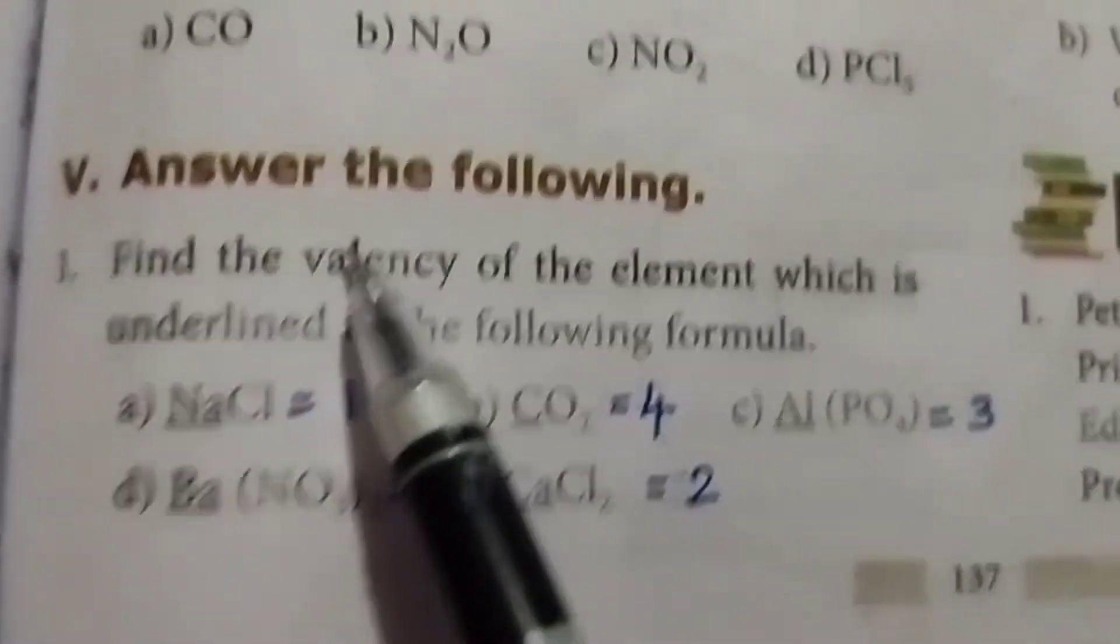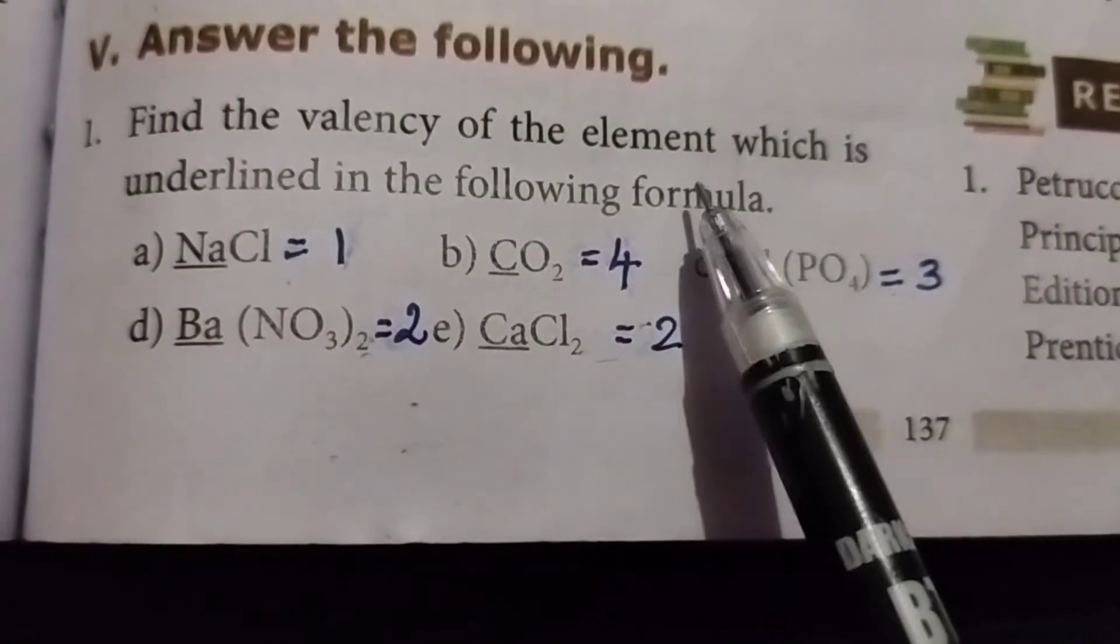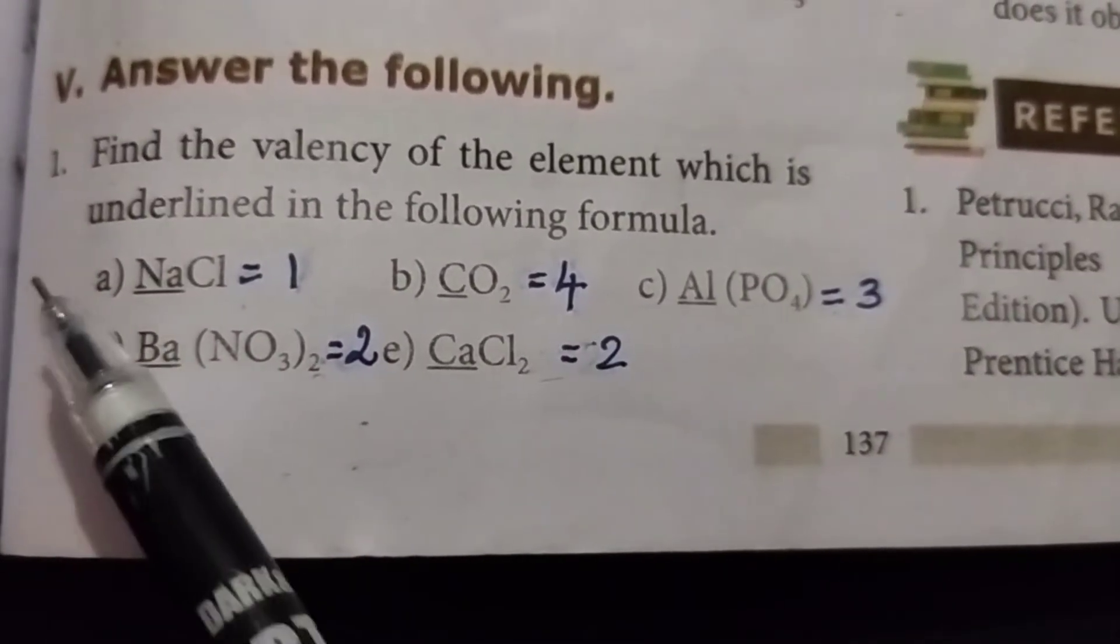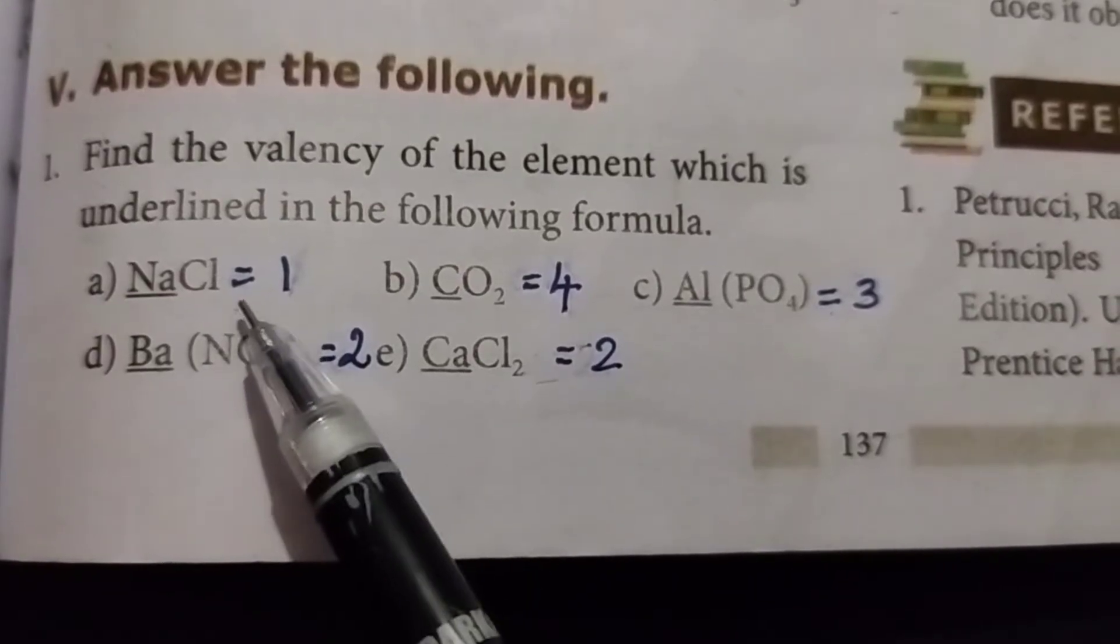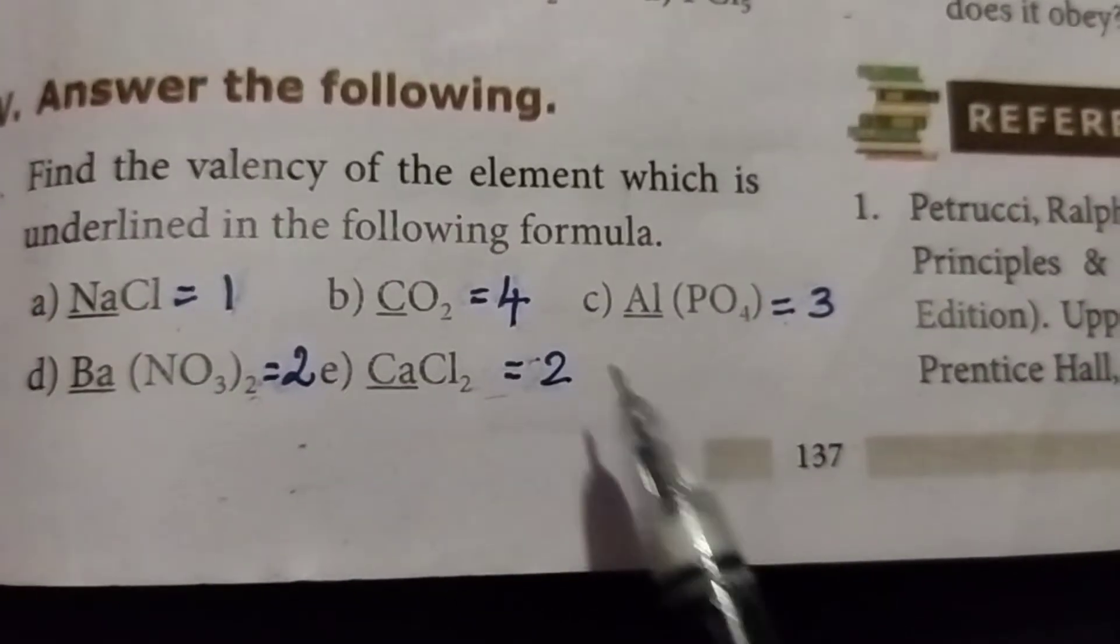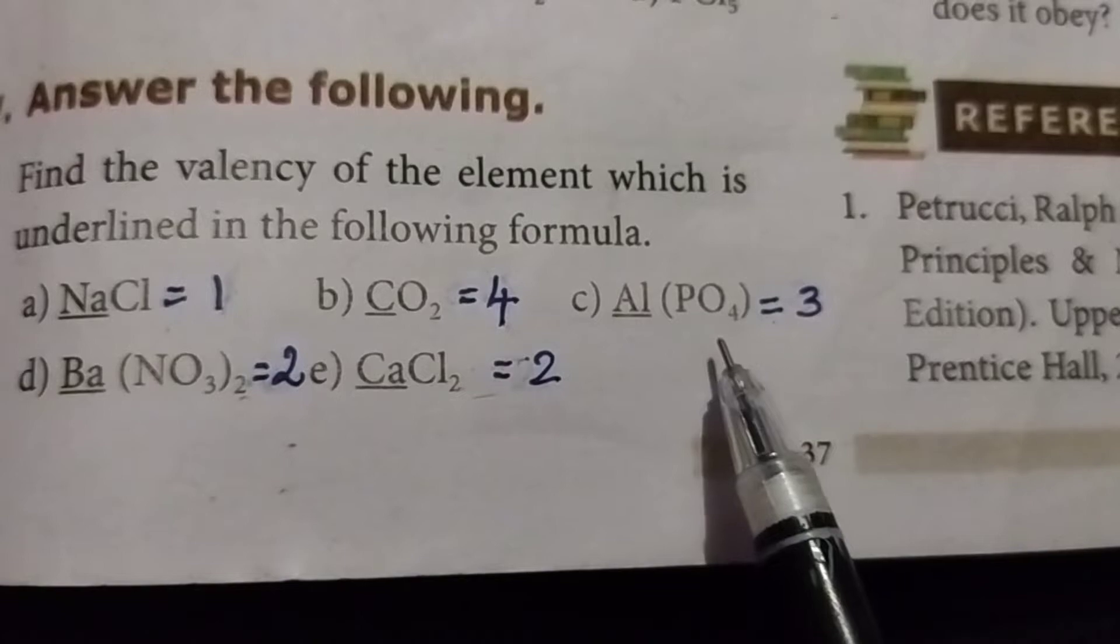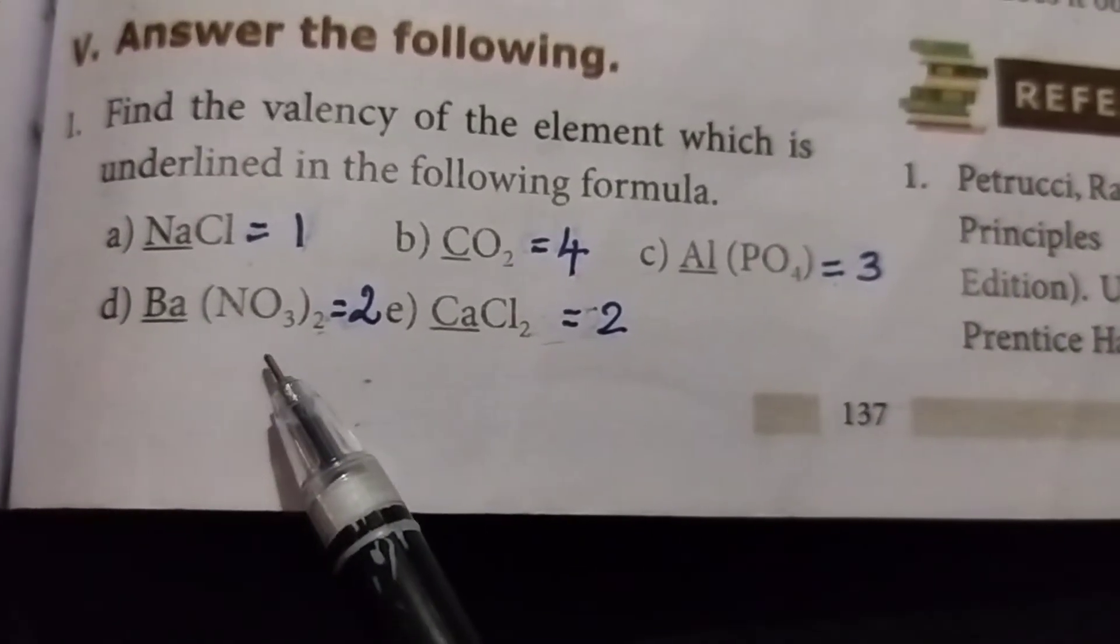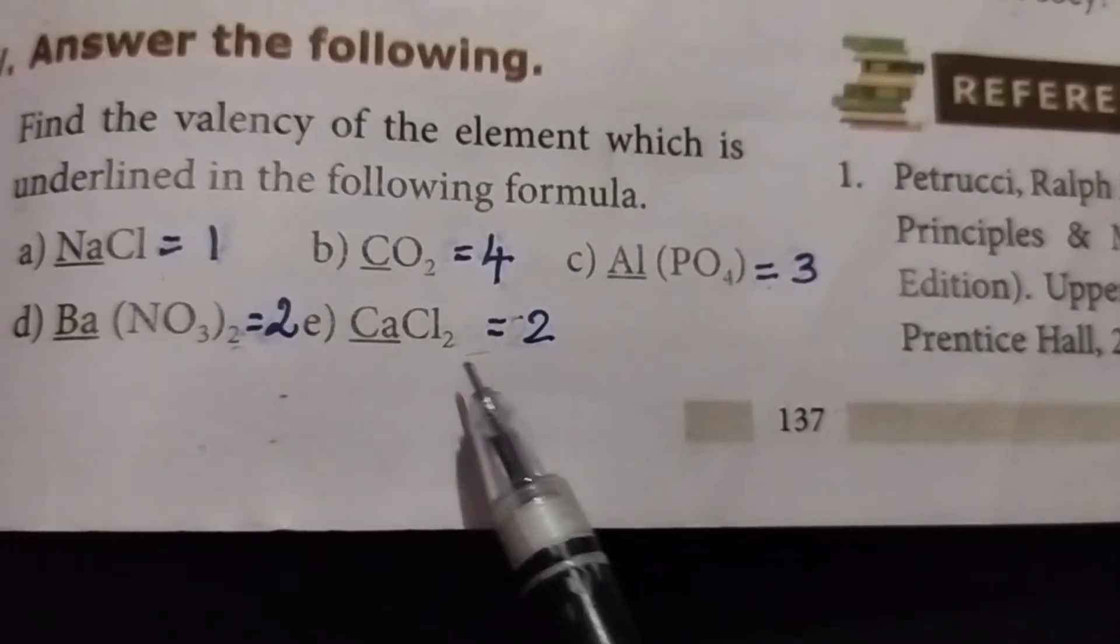Fifth Roman letter, answer the following. First one: find the valency of the element which is underlined in the following formula. First one: NaCl equals answer 1. Then B: CO2 is equal to 4. Then C: AlPO4 equal to 3. Option D: Ba(NO3)2 is equal to 2. Then CaCl2 is equal to 2.